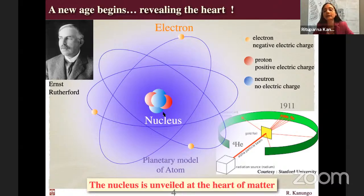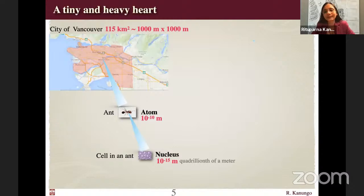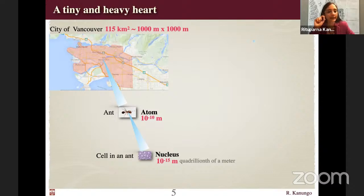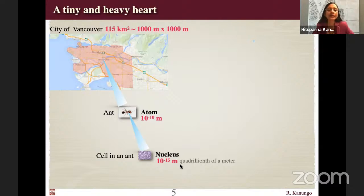At the heart of all visible matter lies the nucleus, and it's very, very tiny — much tinier than the atom. To get a sense of dimension: if you look at the city of Vancouver and consider a tiny ant sitting in the center of the city, that would be an atom. And if you think the ant is made up of tiny cells, then one cell in the ant would be a nucleus. It's 15 orders of magnitude smaller than a meter — a quadrillion of a meter — a very, very tiny heart, but a very powerful one.